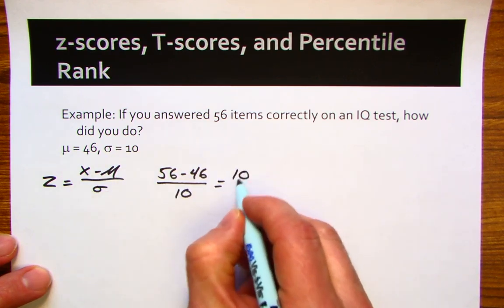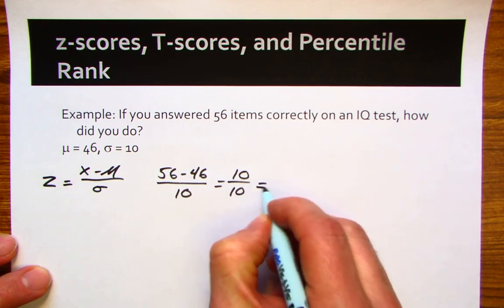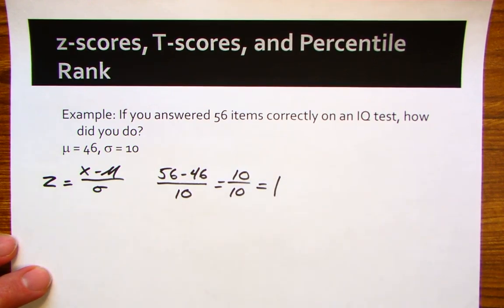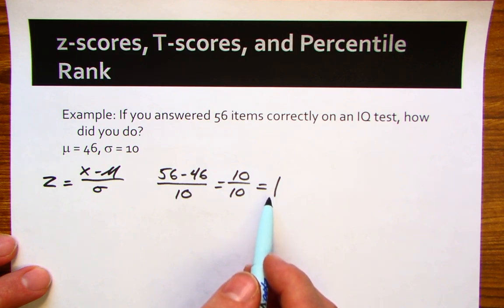Which gives us 10 divided by 10, which gives us 1. You scored 1 standard deviation above the mean.